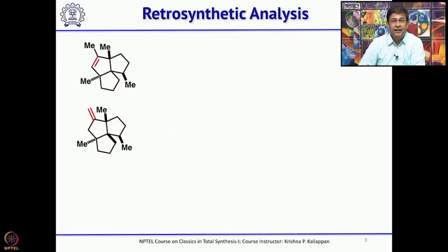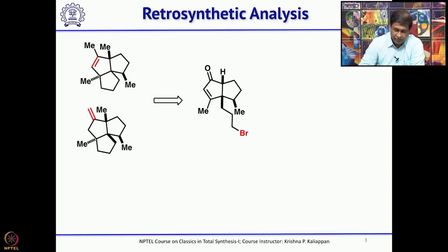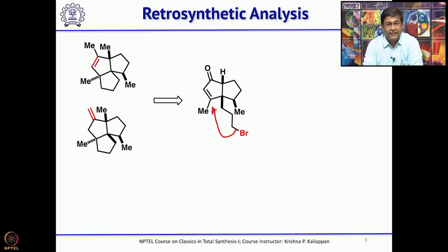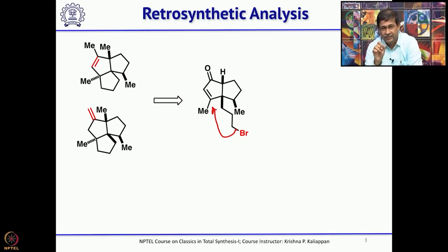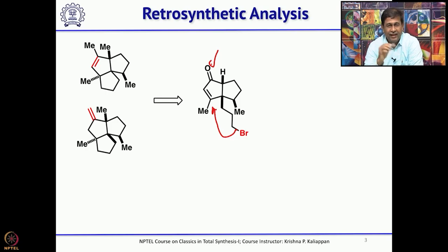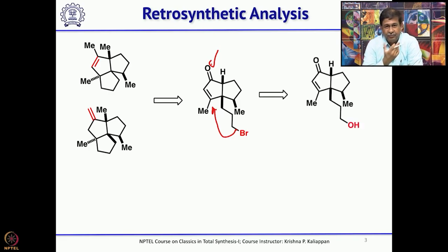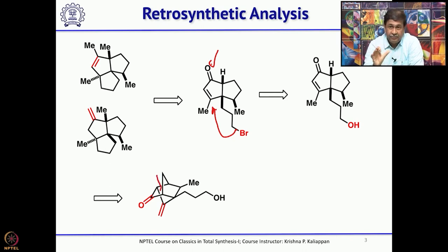From the retrosynthetic point of view, both alpha and beta isocomines can be obtained from one common intermediate — an enone. The 5-exo radical cyclization can be used to construct the third five-membered ring; already there are two five-membered rings and the third can be easily constructed by this 5-exo radical cyclization. Simple Wittig will give one isocomine, and isomerization of the double bond to the endo-olefin will give the other. The bromide can be easily obtained from the corresponding alcohol, and the first key step from retrosynthetic analysis is the fragmentation of the bridged system to the fused ring.